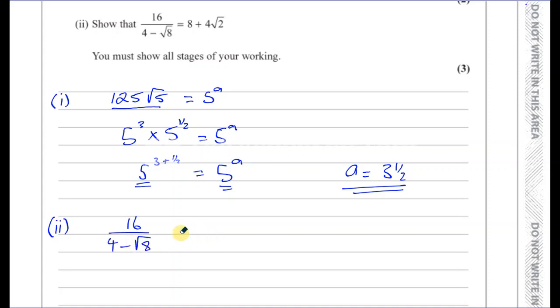So you've got 16 over four minus the square root of eight. Now what we can do here is we can multiply both the numerator and the denominator by the conjugate of the denominator. We want to rationalize the denominator. So if I multiply both the top and bottom of this fraction by four plus root eight, then you haven't changed the value of this fraction, but you have changed its form so that this will become rational at the bottom.